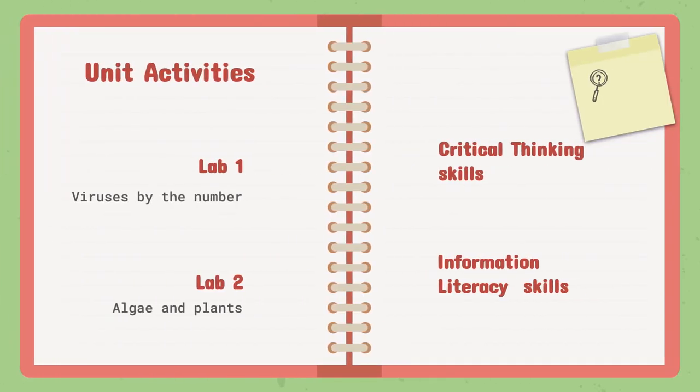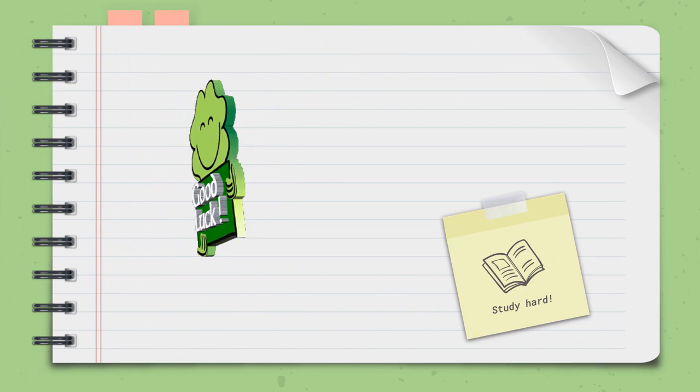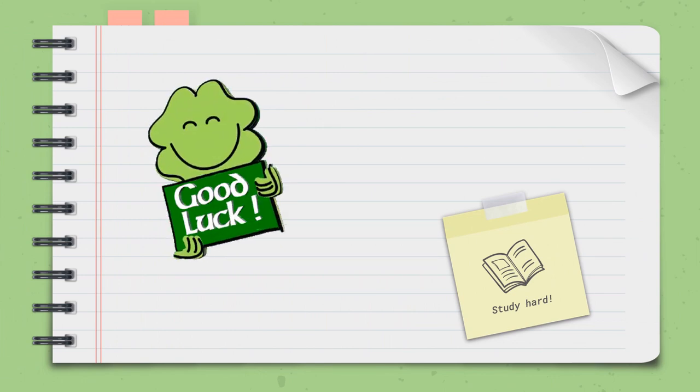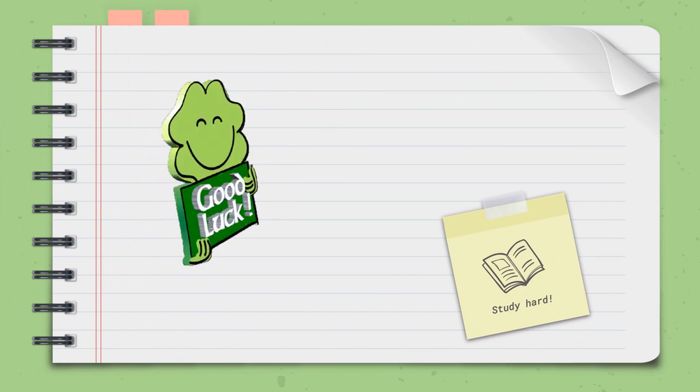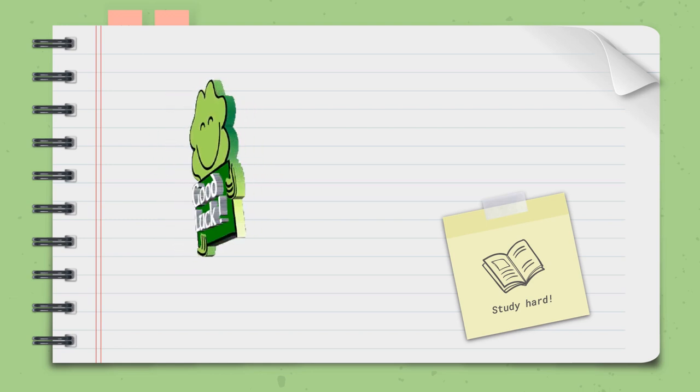As for the unit activities, we are going to have two labs concerning this unit: Viruses by the Number and Algae and Plants. We are going to talk more about microorganisms and view them in the lab. The skills we are going to gain from this unit are critical thinking skills and information literacy skills. Thank you so much, sixth grade — I'm looking forward to you gaining this new knowledge. Good luck, study hard, and you know where to find me if you ever need anything.